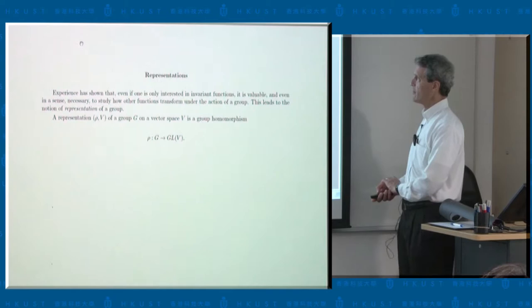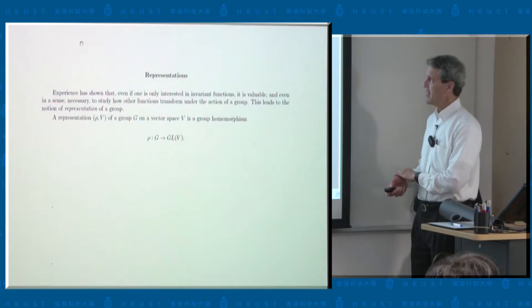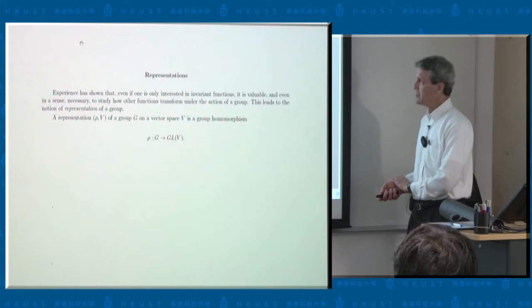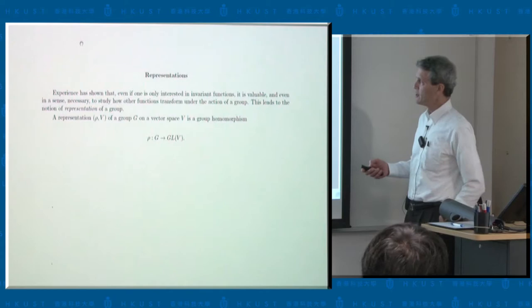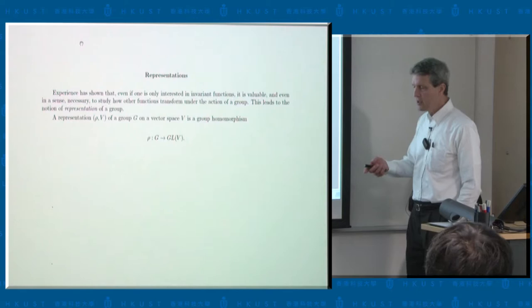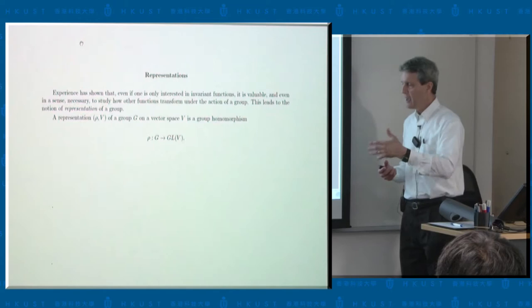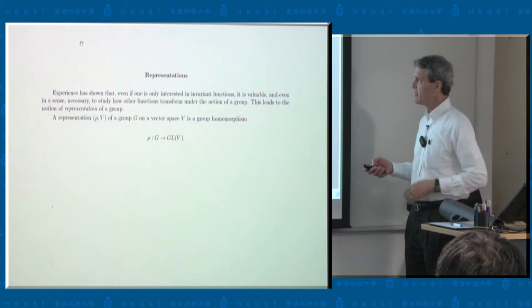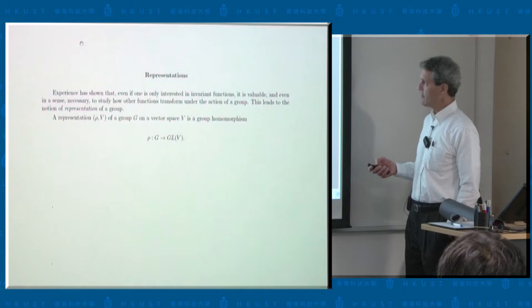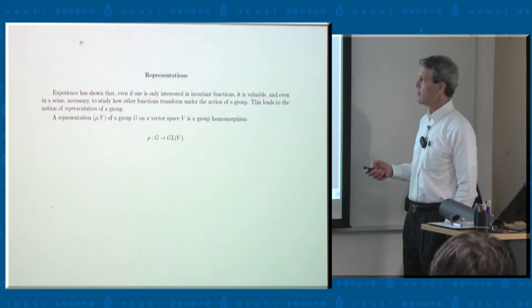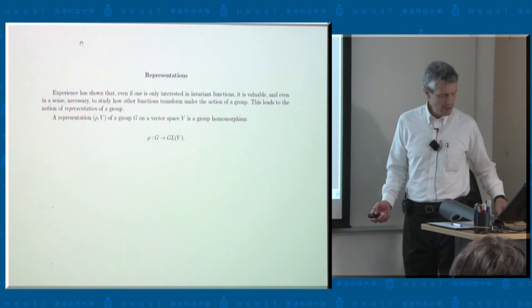Even if you're only interested in invariant functions, you also have to study functions which are not invariant, which leads to the idea of a representation. If G is acting on a space and you take a function and move it around by the group, you get a bunch of other functions. Taking all linear combinations gives a vector space preserved by the group, and the group defines linear transformations on that vector space. A representation is just a group homomorphism from G into the general linear group on some vector space.